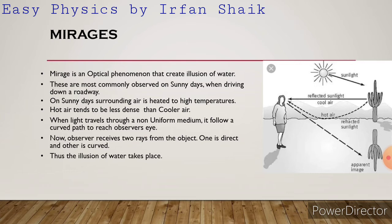The observer receives two rays from the object: one is direct and the other is curved. You can observe both rays in the diagram — one light ray traveling in a straight line and another as a curved line. That is why the illusion of water takes place.